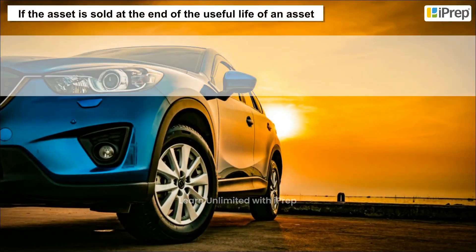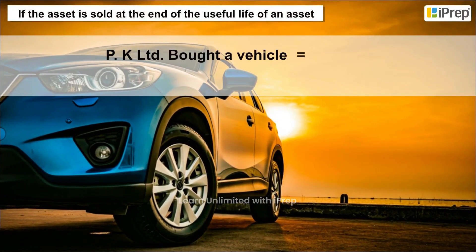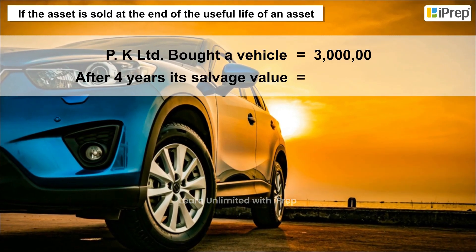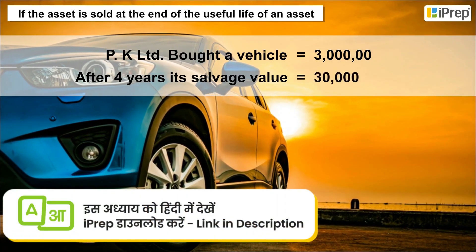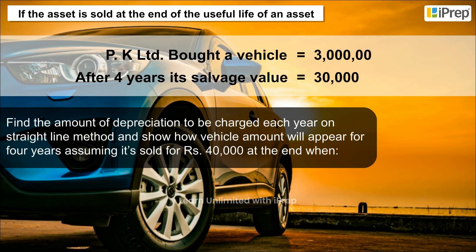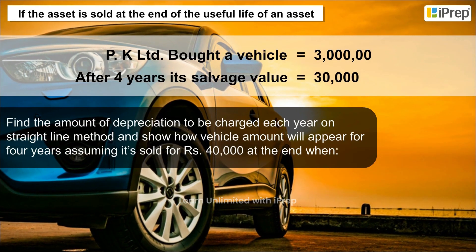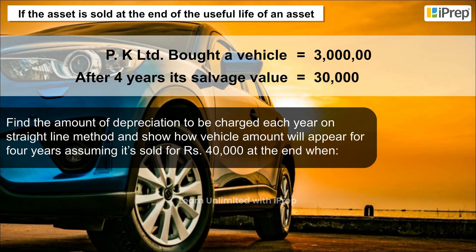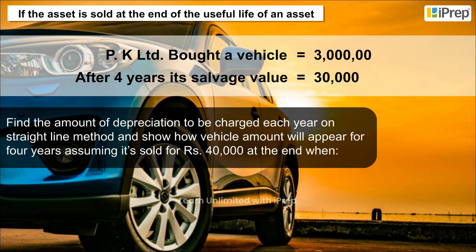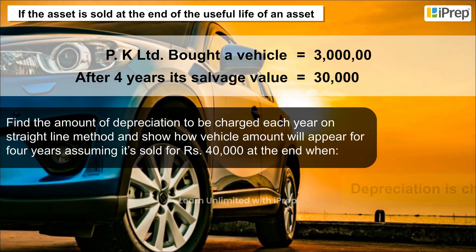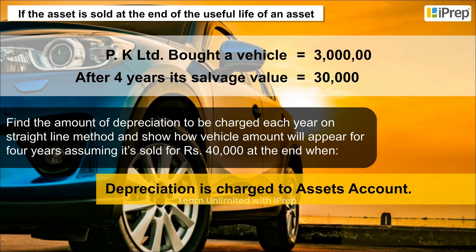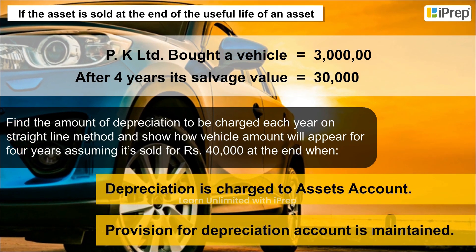For example, PK Limited bought a vehicle for 3 lakh rupees. After 4 years, its salvage value is estimated at 30,000 rupees. Find the amount of depreciation to be charged each year on the straight-line method and show how the vehicle account will appear for 4 years, assuming it is sold for 40,000 rupees at the end — under (A) depreciation charged to asset account, and (B) provision for depreciation account maintained.